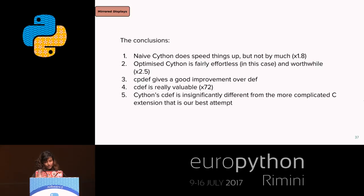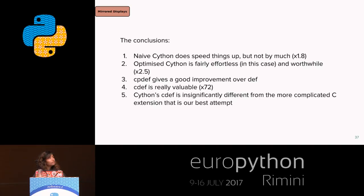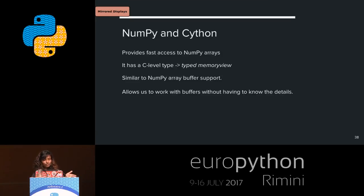Conclusions: naive Cython — just pasting Python code into a .pyx file — does speed things up, but probably not enough on its own (around 1.8x). Optimized Cython is where you have type declarations and use cdef and other modifications. cpdef gives a really good improvement over def, but cdef is where the actual power is — you have to be very careful when using it. cdef is almost equal to the C version of the code.